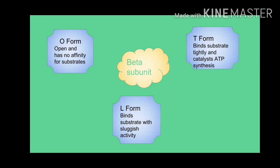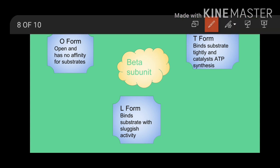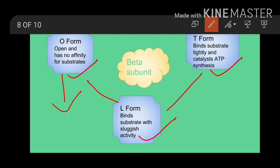Before we study the binding change mechanism, it is important to know about the different conformational forms of the beta subunit. There are three conformational forms: the O-form, the T-form, and the L-form. The O-form has no affinity for substrate. The T-form has the highest affinity for substrate. The L-form is in between the O-form and T-form in its affinity for substrates. From these definitions it is clear that ATP will be released in the O-form, whereas ATP synthesis will take place in the T-form.